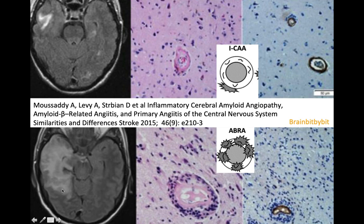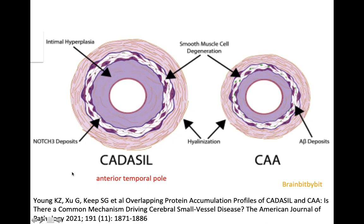Because of the involvement of the anterior temporal pole, the differential diagnosis for both cases may also include CADASIL, which occurs in a special group of patients because it is autosomal dominantly inherited. We will discuss that next time.